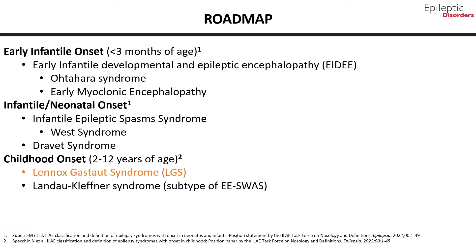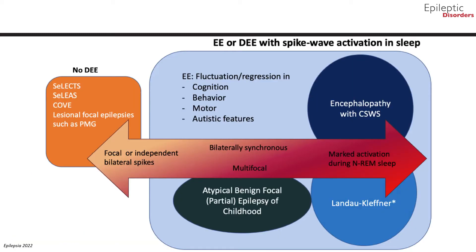In part two of this module, we will mainly focus on childhood-onset epileptic encephalopathies, including Lennox-Gastaut syndrome and Landau-Kleffner syndrome, which is a subtype of epileptic encephalopathies with spike wave activation in sleep. Before we go to the next type of epilepsy syndrome, we will briefly talk about developmental encephalopathy and epileptic encephalopathy with spike wave activation in sleep, based on the new ILAE criteria.